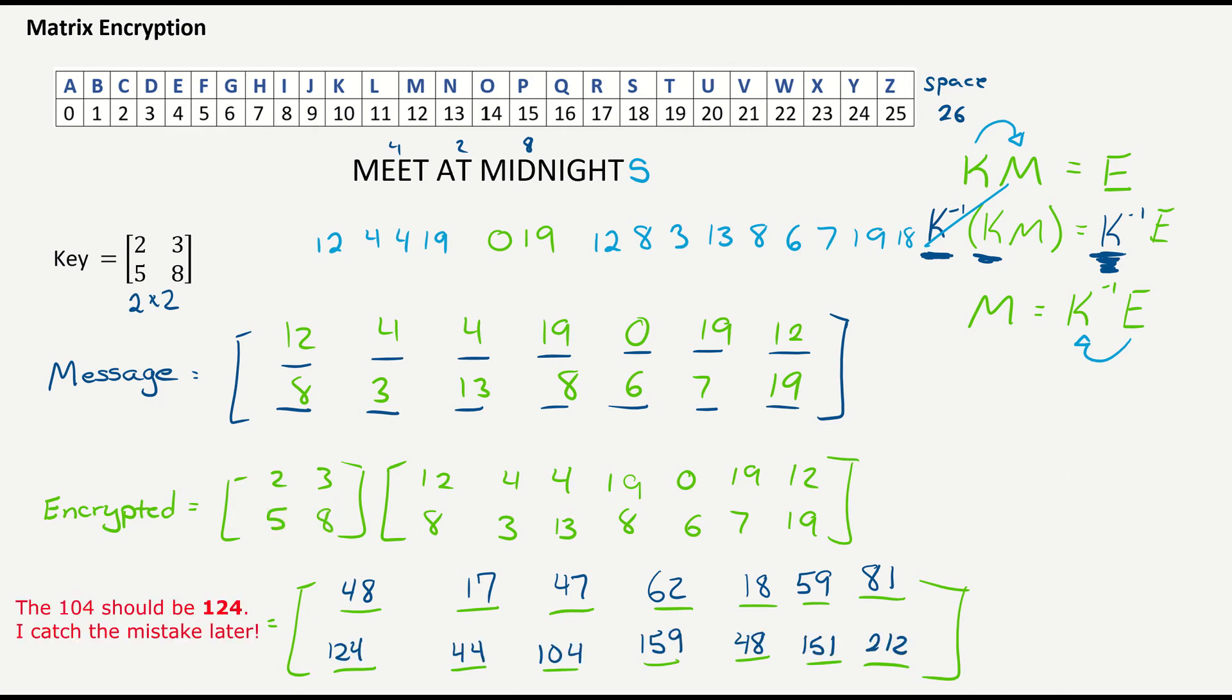I have finished creating my encrypted matrix here. Again, you can check my multiplication of the second row. Now that, highlighted in yellow, is what I will send to my recipient. That's our encoded message. But they also need to have the key matrix up there.